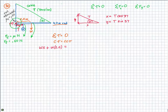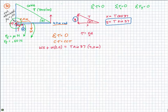The counterclockwise torque is created by the tension in the cable. For torque, force times distance requires the force component perpendicular to the rod, which is the Y component of tension: T sine 37. Multiply that by the distance from the pivot point, which is 4.0 meters. Pulling W out of the equation: W times (2.0 plus x) equals T sine 37 times 4, which gives 2.41T equals W times (2.0 plus x).